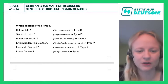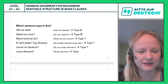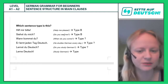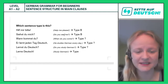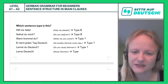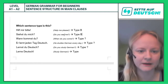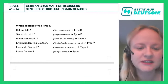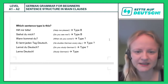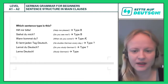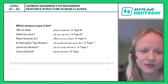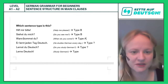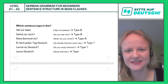Third example: 'Wann kommst du?' — 'When do you come?' or 'When will you come?' This is again a question, but this time we have a question word at the beginning: 'wann,' meaning 'when.' That makes it a W-question, which is sentence type A. Therefore the conjugated verb 'kommst' is in the second position of the sentence.